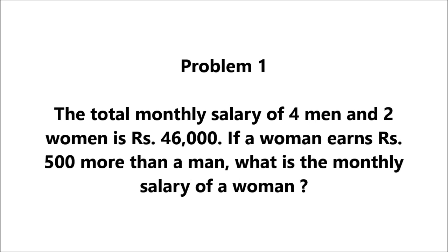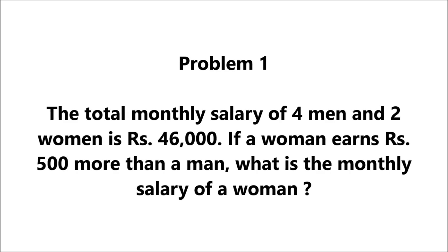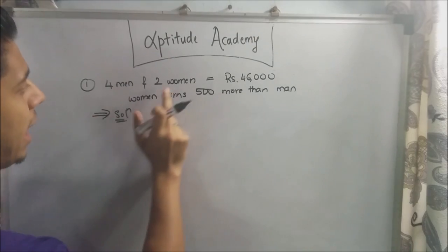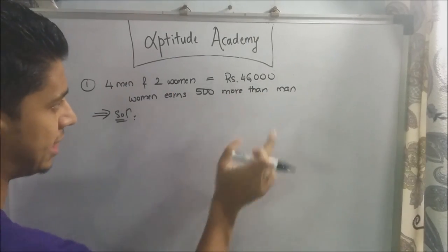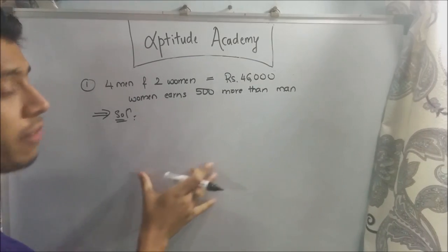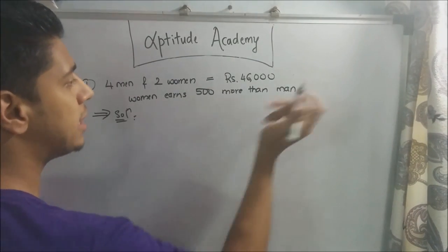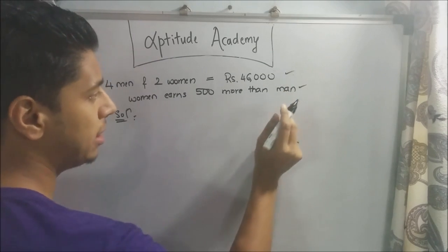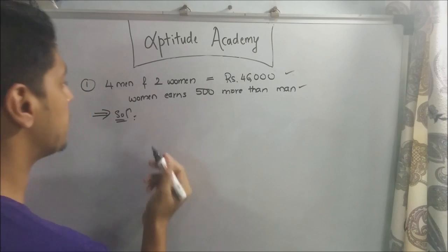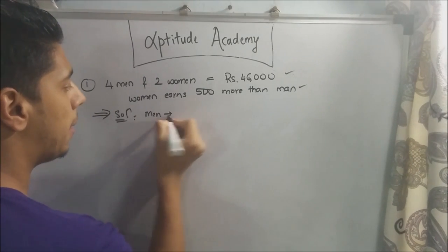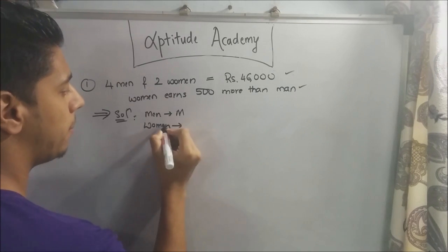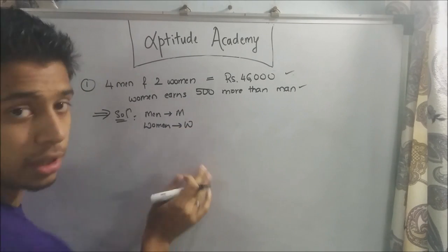If a woman earns rupees 500 more than a man, what is the monthly salary of a woman? The salary of four men and two women together is rupees 46,000, and a woman earns 500 rupees more than a man. What you should do is take these statements and form two equations, solve them, and find the salary. Let's denote men by m and women by w.